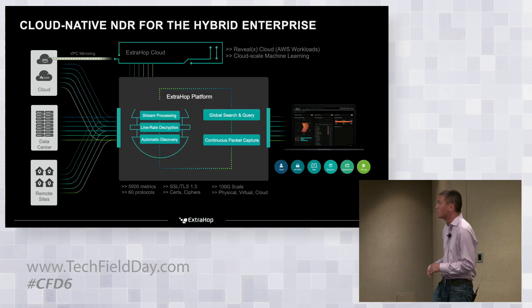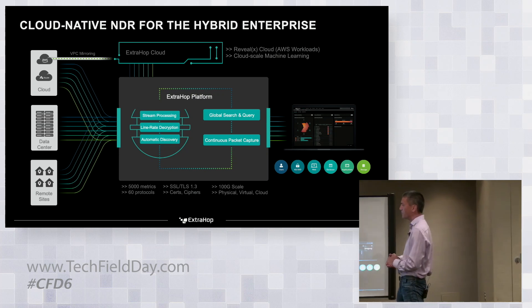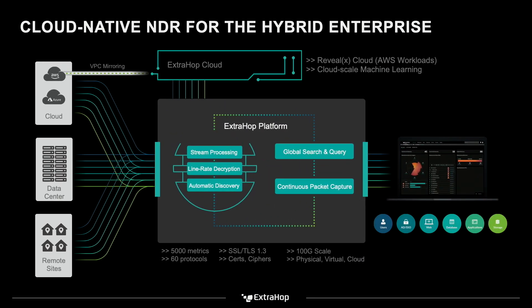Before I jump in, I want to give you a higher-level architecture of ExtraHop as an entire workflow. On the left you have on-prem data centers, remote sites or remote branch offices, and then cloud. We can take data from an on-prem environment or a remote site and run real-time stream processing, line rate decryption, and automatically discover and classify all assets. We also have the ability to leverage global search and query to jump into records and continuous packet capture to jump into network packets. That top line alludes to our RevealX Cloud product and how it leverages AWS, Azure, and GCP.